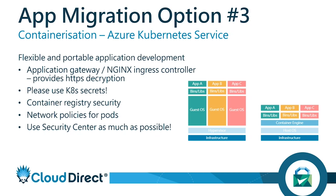For the container registry, consider encrypting it with Microsoft-managed keys at minimum. If you want to bring your own key, you can do that as well. Keys can be stored in a Key Vault in Azure, and you can configure Managed Service Identities so that only the container registry can access that Key Vault to retrieve the key and encrypt images.